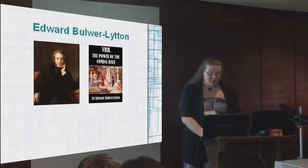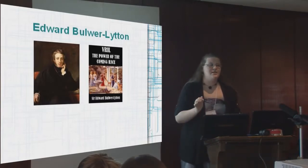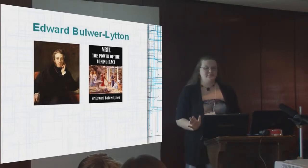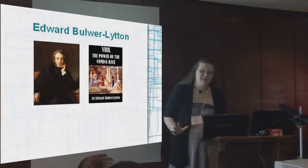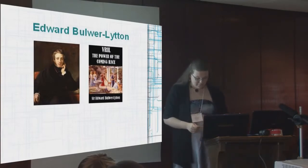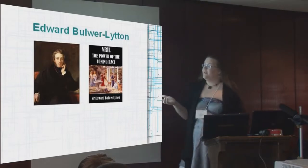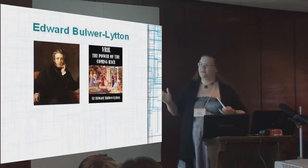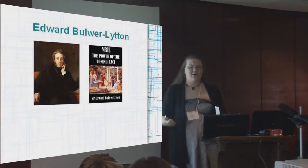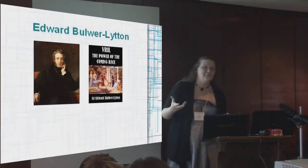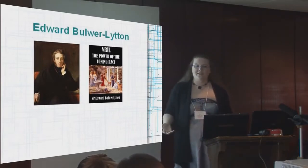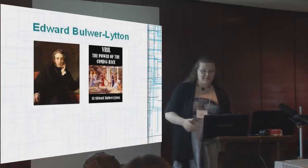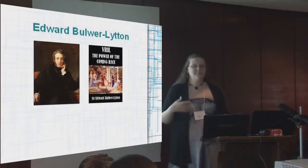What started this all was that some people took it seriously. Because it was such an early example of science fiction, they didn't really understand that it was fiction. And they thought that he was talking about an actual society of angels that lived underground and had this magical Vril. So, what happened was this one society took it and wrote a lot of philosophical papers about it and really brought it to the mainstream. And because he was already a popular author, a lot of people had read this and were like, oh, you know, it's totally real.